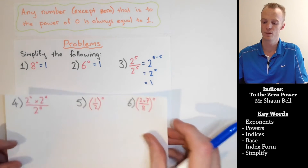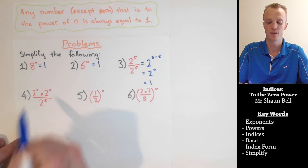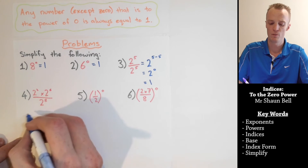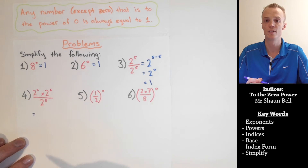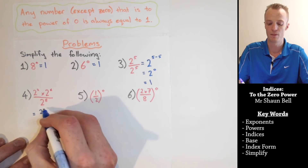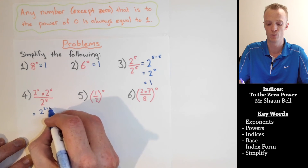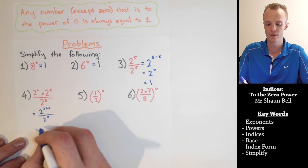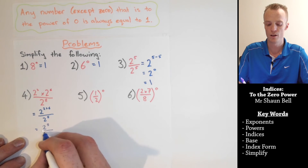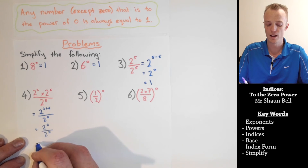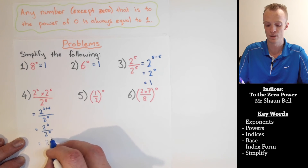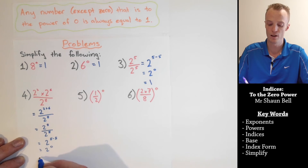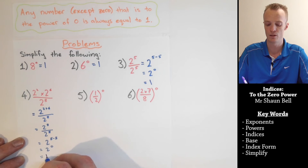Let's take this rule where the problem looks a little different. What if we have two to the second power times two to the sixth power, all divided by two to the eighth power? My first step is to add the exponents on the top line, keeping the base: two to the power of two plus six, divided by two to the eighth power. That gives us two to the eighth power over two to the eighth power. We subtract the exponents — eight subtract eight — giving two to the zeroth power, which equals one.